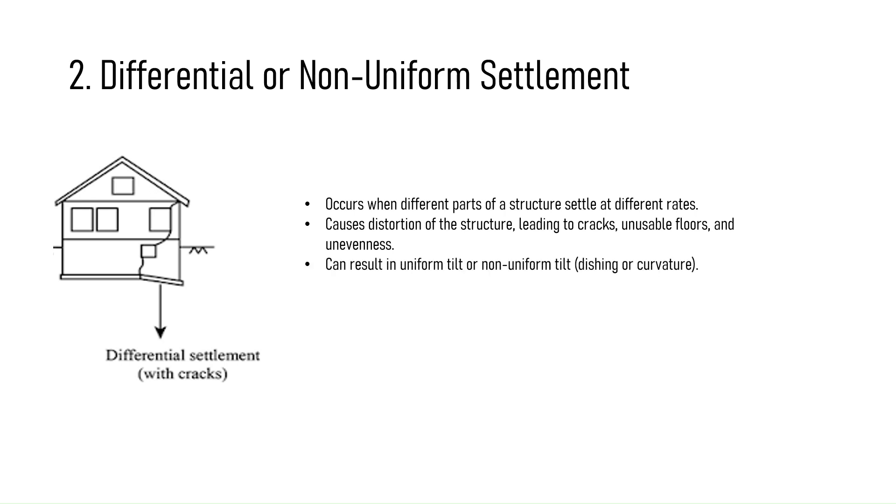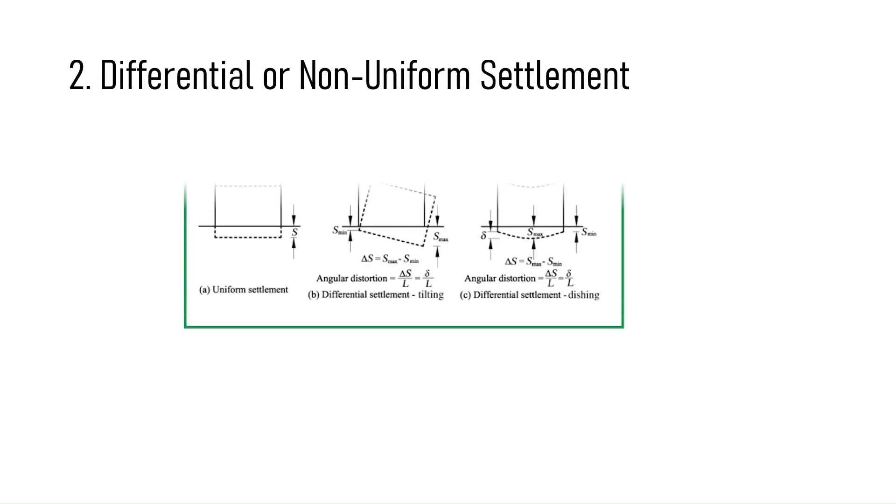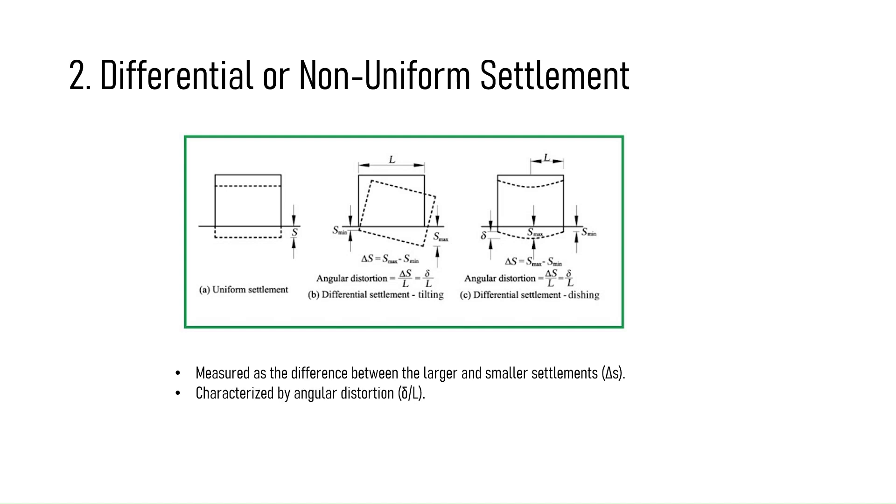In the figure, B shows the differential settlement that is tilting. It shows a uniform tilt where the entire structure is subjected to a rotation. Figure C shows a non-uniform tilting also called dishing or curvature settlement. Both these types of differential settlement are caused due to non-uniform bearing stress of the soil and non-homogeneous subsoil conditions. As explained in the figure, differential settlement represented as delta S between two points is the larger settlement minus the smaller settlement. It is also characterized by angular distortion, which is determined as the ratio of differential settlement between the two points and the horizontal distance between them, that is delta by L.